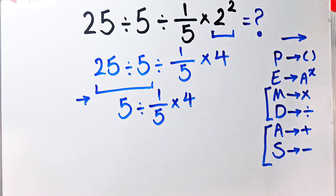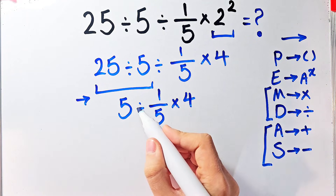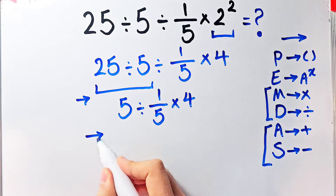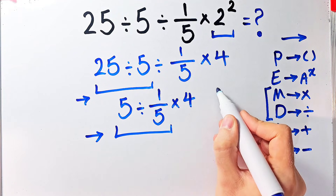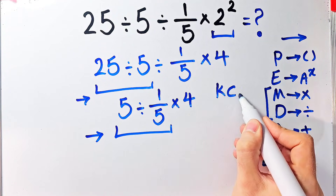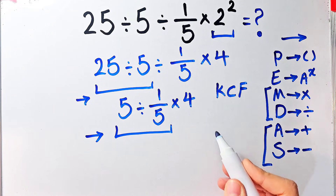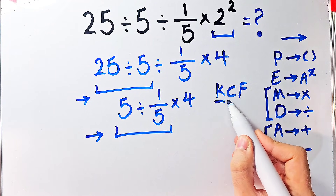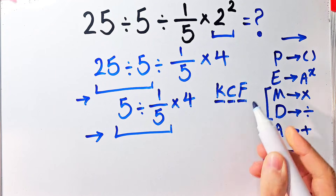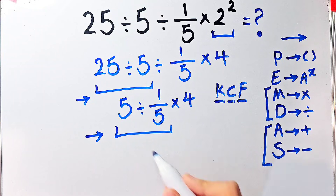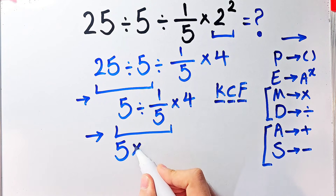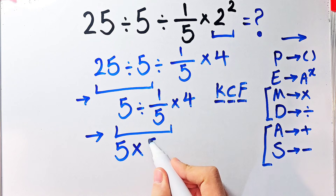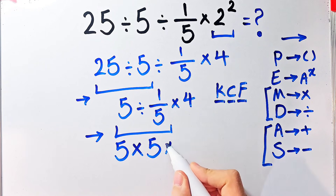Again we have division and multiplication, so we start from the left. To solve 5 divided by 1 over 5, we need to follow the KCF rule: K stands for Keep, C stands for Change, and F stands for Flip. We keep the first number as it is, change the sign to multiplication, and flip the second fraction. Now we have 5 times 5, then times 4.